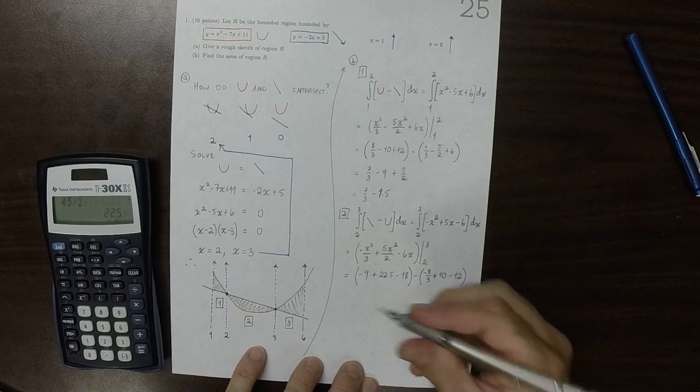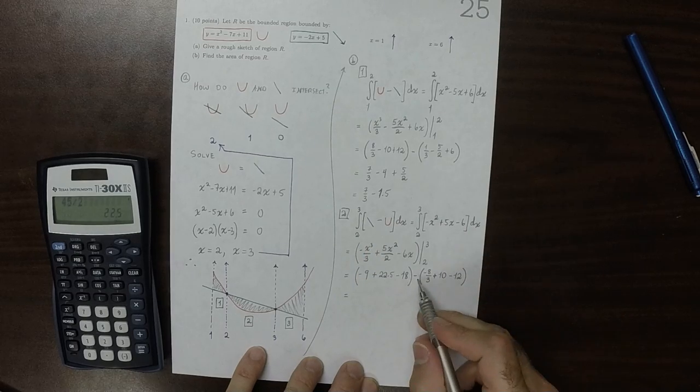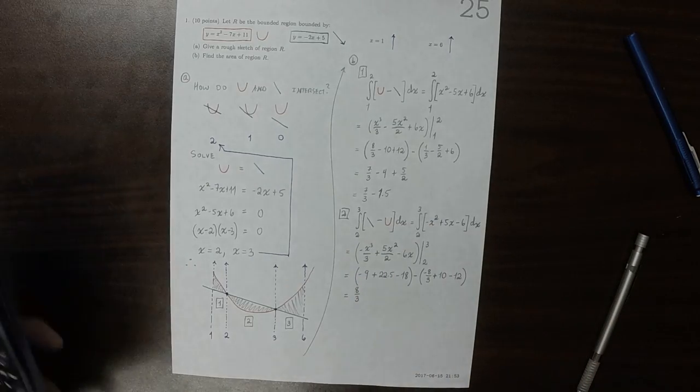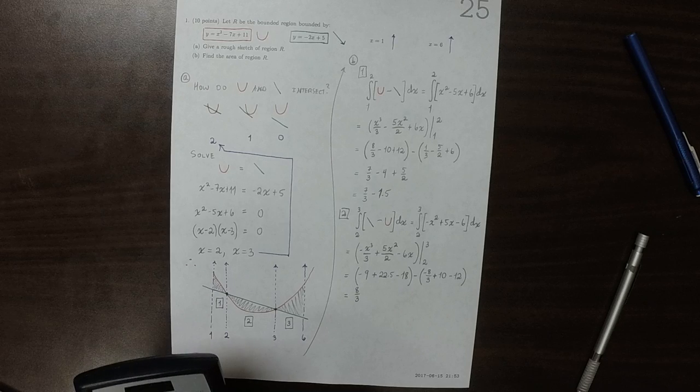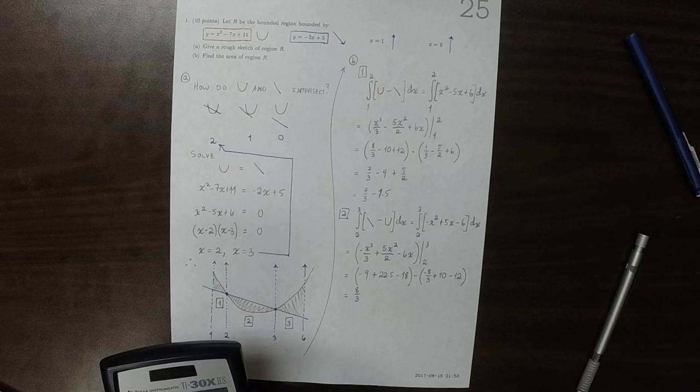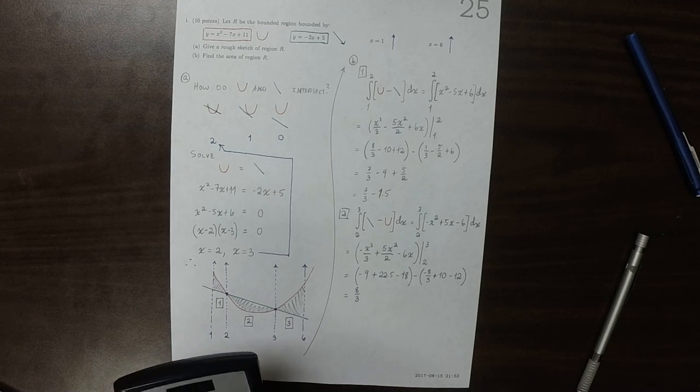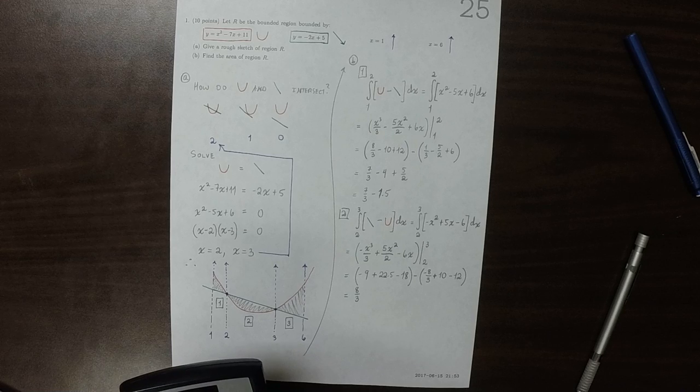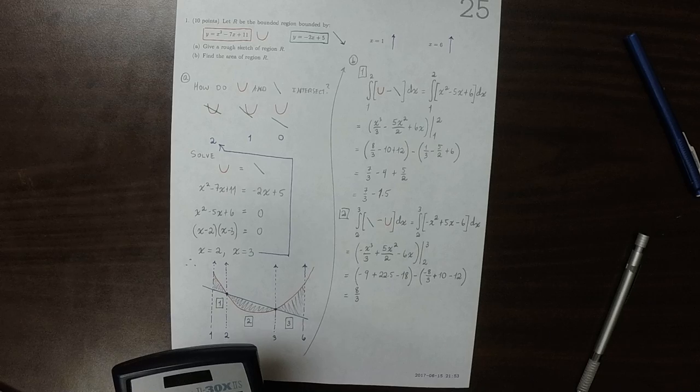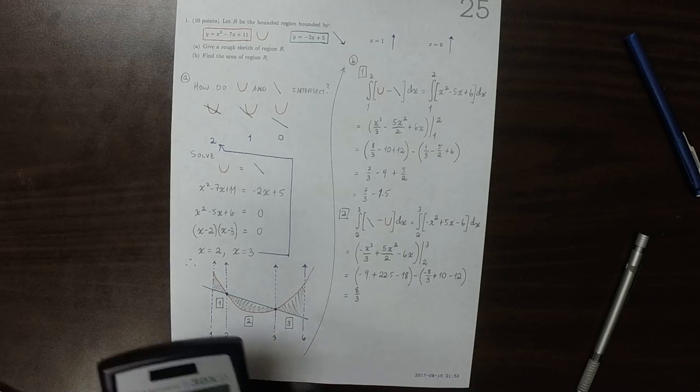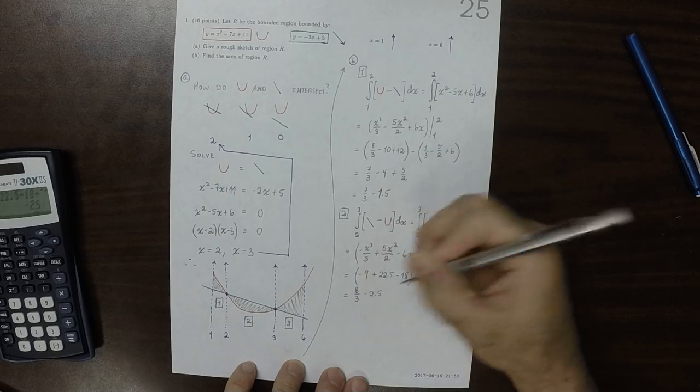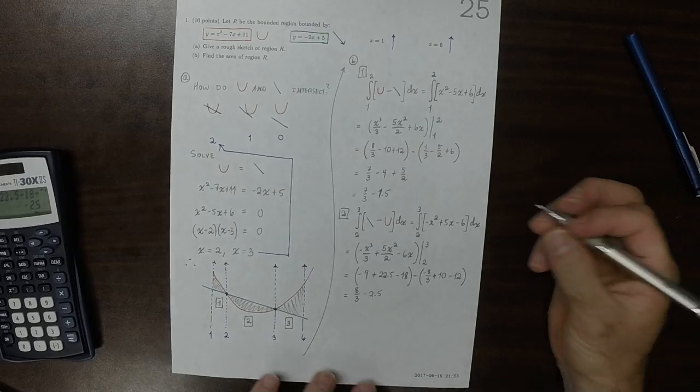So again, we've got some thirds there, so that's plus 8 thirds, because it's subtracting 8 thirds, so that'd be 8 thirds, and then we can add up the rest of the things there. So negative 9 plus 22.5 minus 18, and then minus 10 plus 12, distributing all those things. So minus 2 and a half.